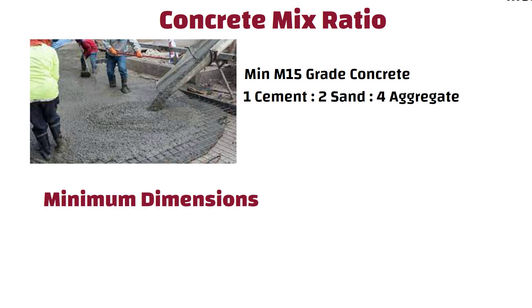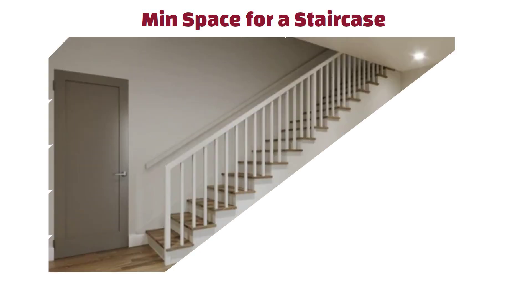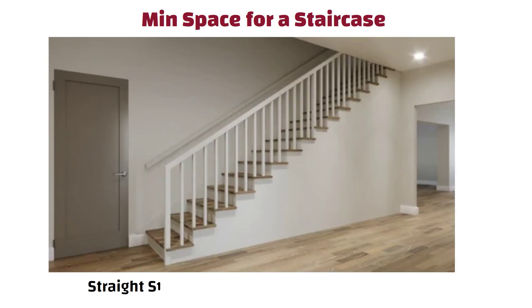13. Minimum dimensions required to construct a staircase. Minimum width required is 6 feet and minimum height required is 10 feet. 14. Minimum space required for a staircase. A minimum space requirement for a straight staircase with no turns or landings is typically around 40 square feet.